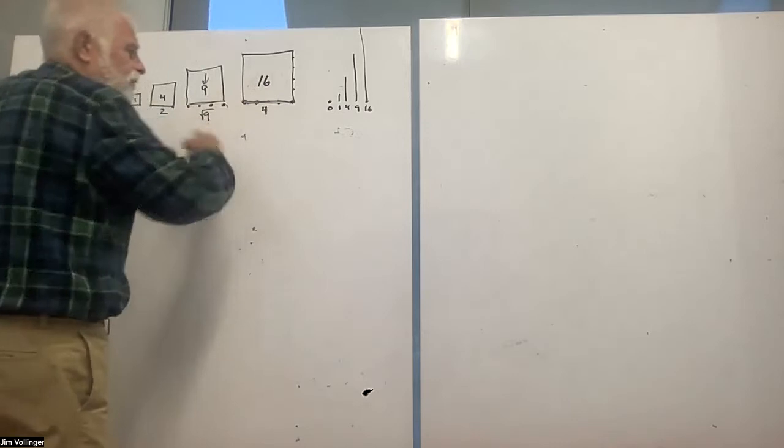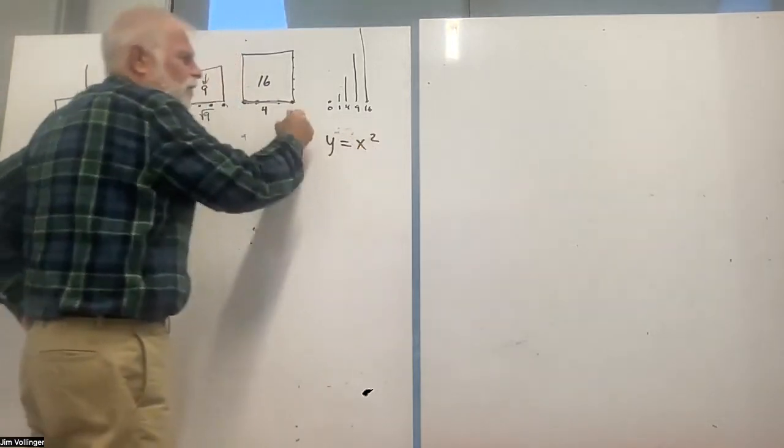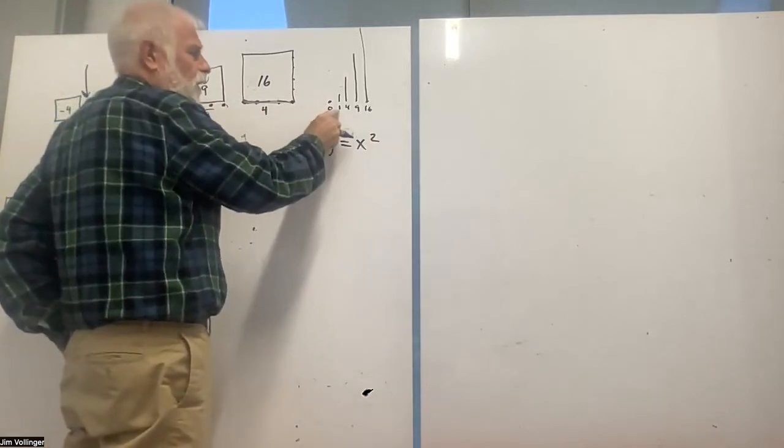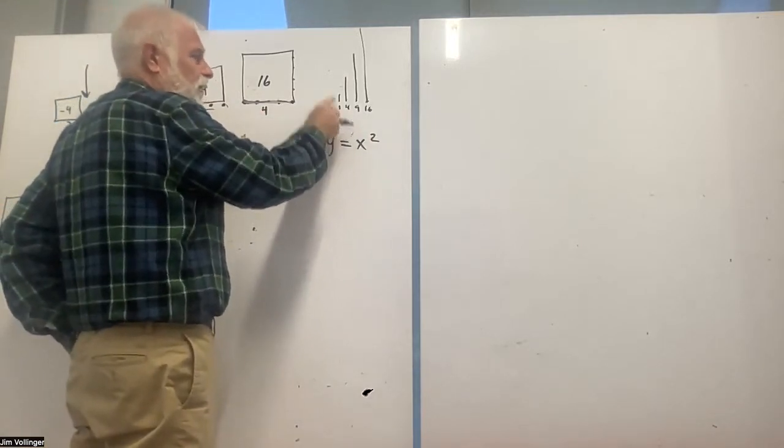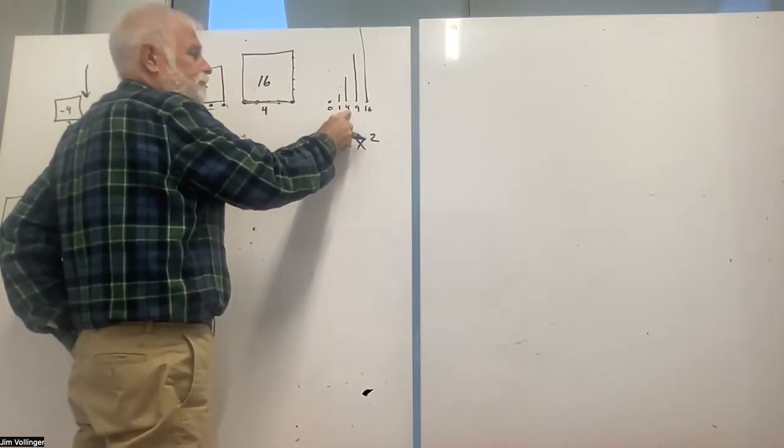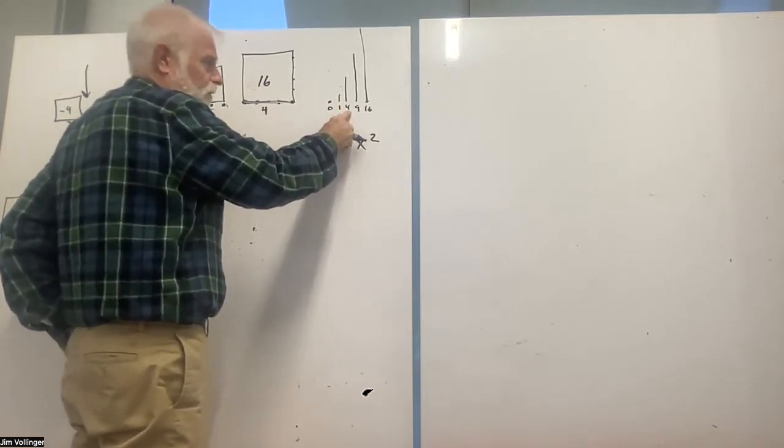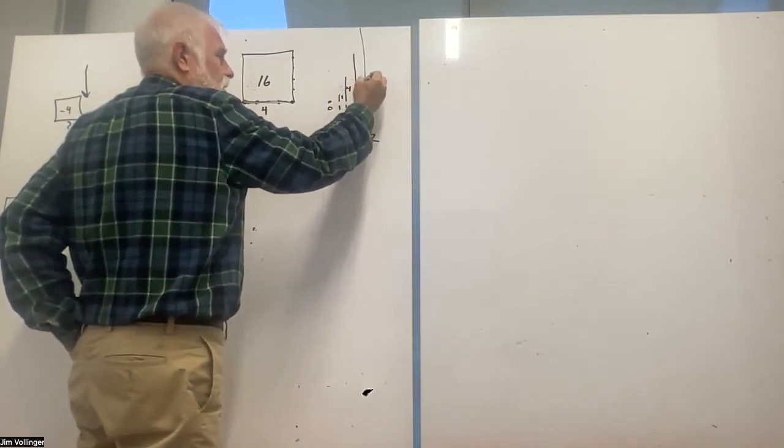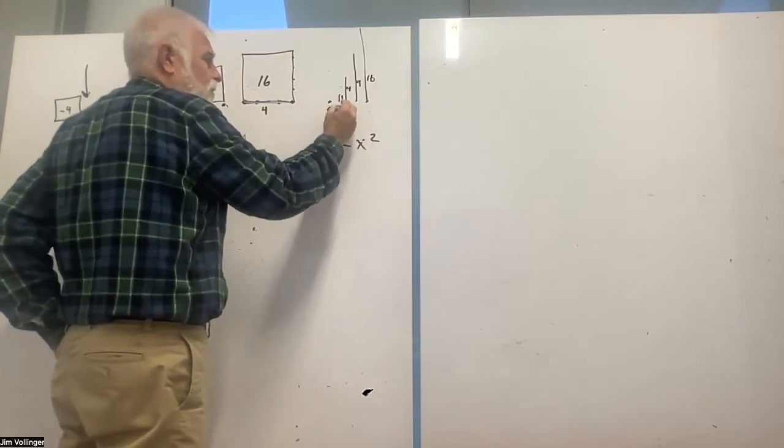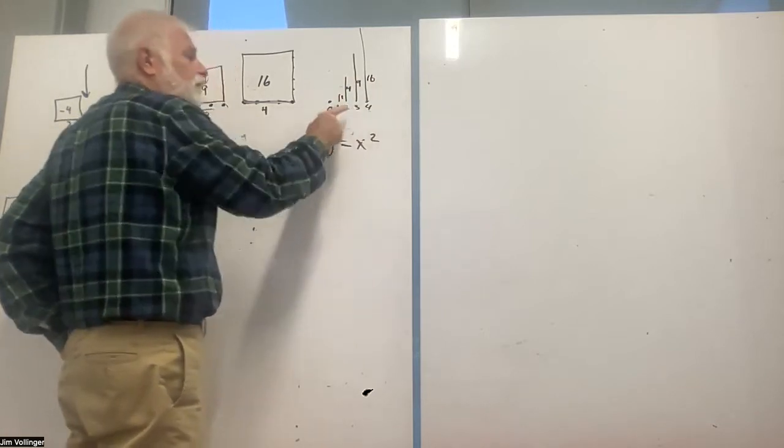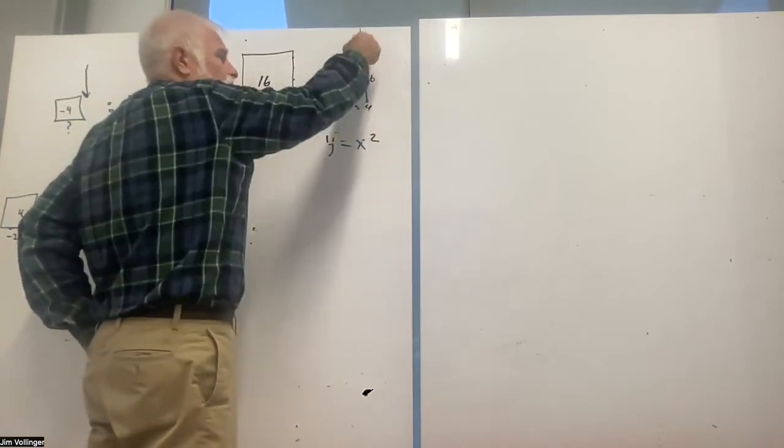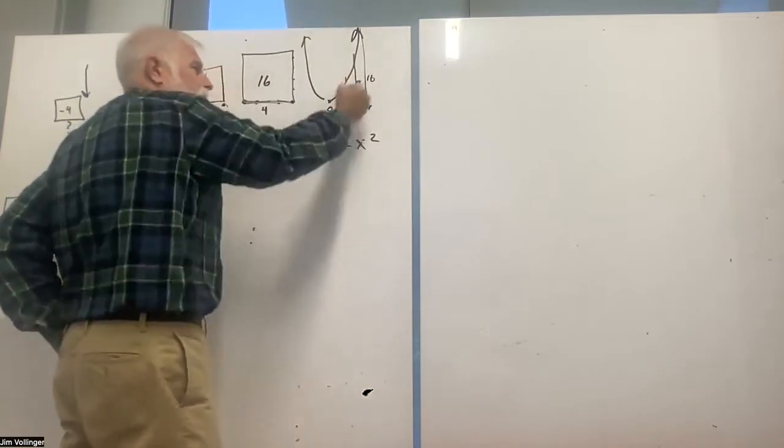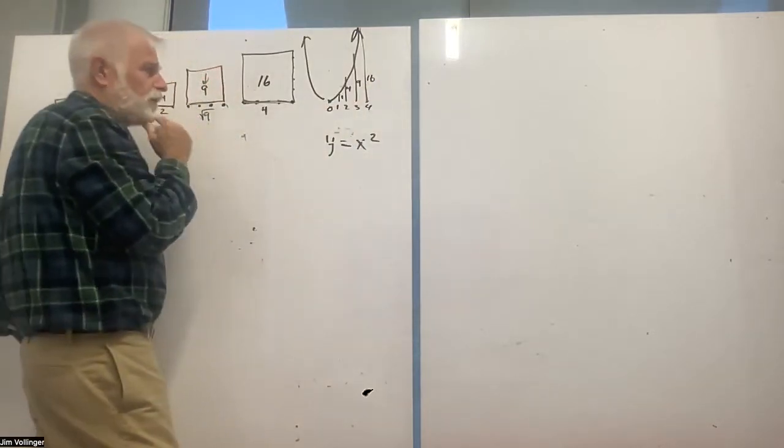Before you studied this function, you probably studied this one. And I'm not working with negatives intentionally right now, but if the side of a square was 0, there's no area, side of a square is 1, area is 1, side of a square is 3, the area is 9, the side of the square is 4, and I think you start to see the right side of that parabola.